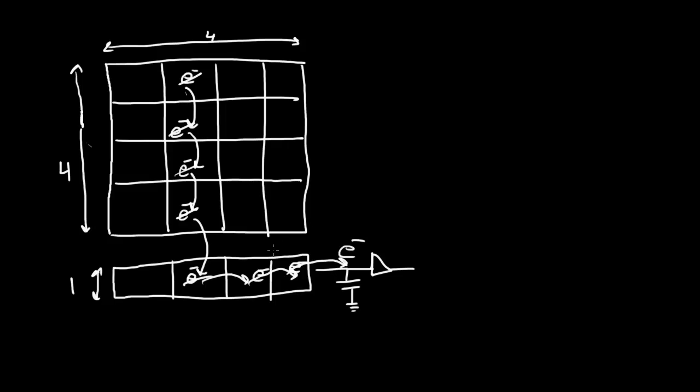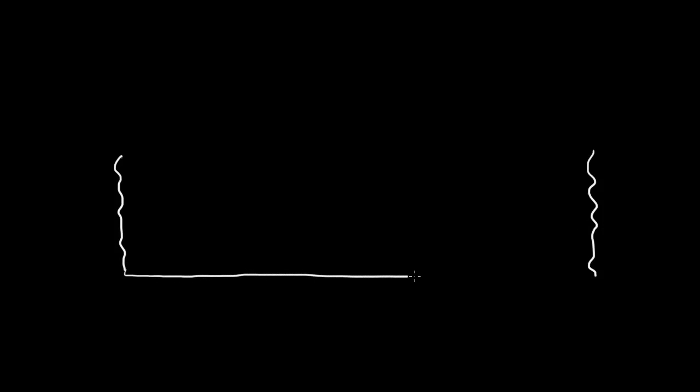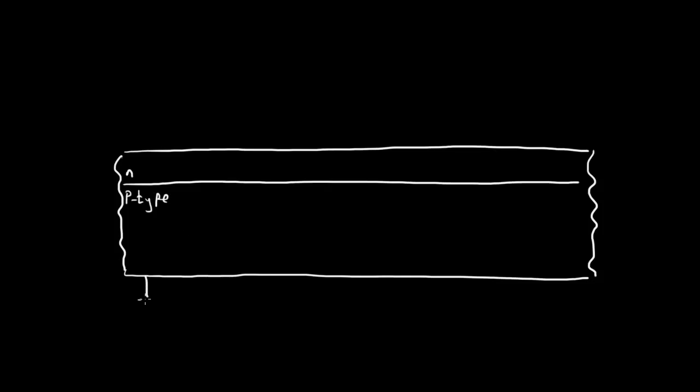Let me redraw this in a different dimension. I'll label the pixels: pixel 1, pixel 2, and pixel 3. In the silicon — let me draw the silicon — we can draw the NP boundary. The p-type layer is usually much thicker than the n-type. The p-type is usually, but not always, grounded.